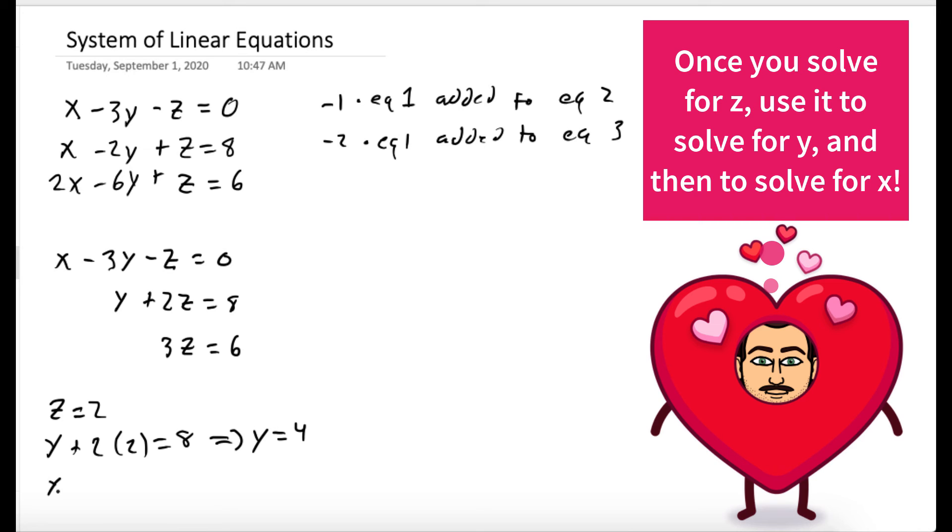And then plug both of these values into the first equation. So x minus 3 times 4 minus 2 is equal to 0. So x minus 14 is equal to 0. So x is 14.